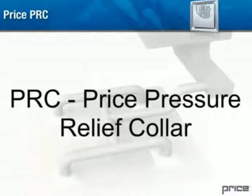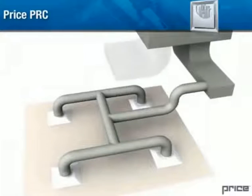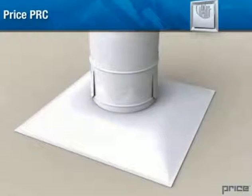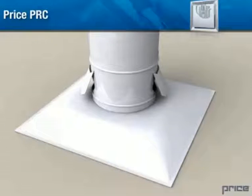PRC Price pressure relief collar: Price pressure relief collars are a simple mechanical way of controlling system pressure. These collars have bypass gates that are forced open by a predetermined system pressure. When they open, air is bypassed into the ceiling plenum, thus reducing the pressure in the duct.